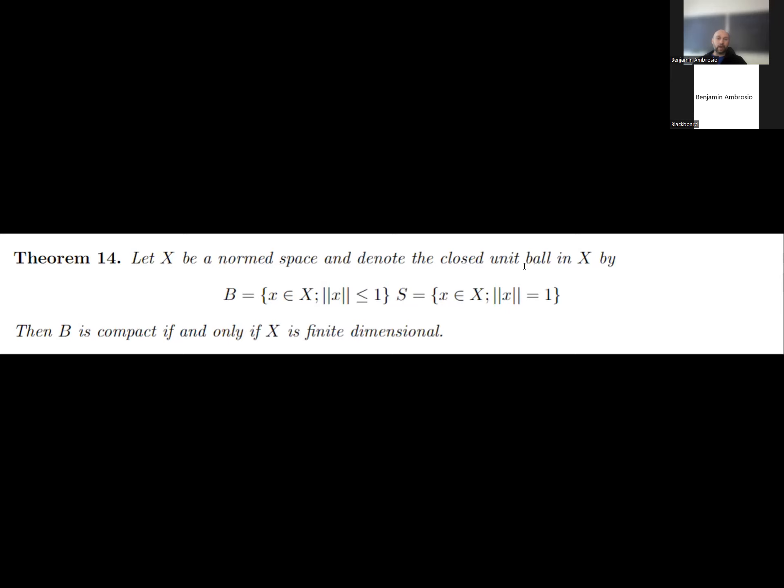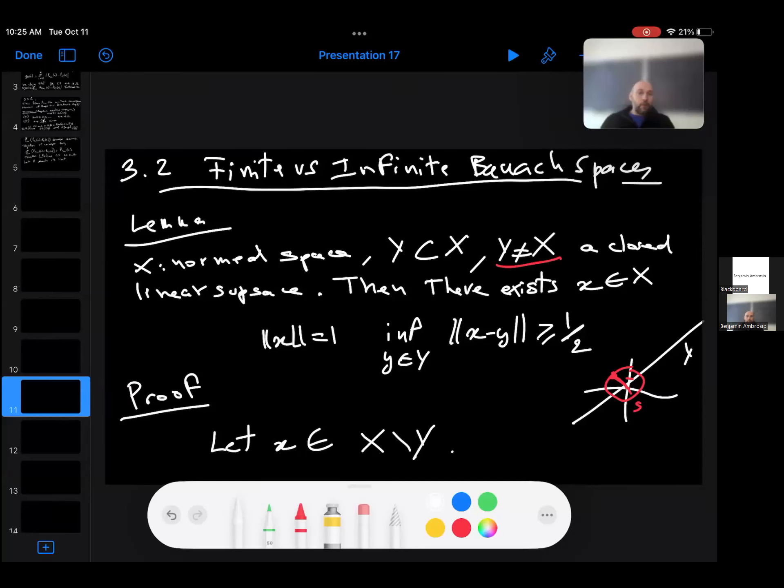So next I'm going to give the ideas of the proof. The proof of the theorem relies on this lemma. When you have a normed space and you have a closed linear subspace Y, which is a proper subspace, that means Y is not equal to X, there exists some x such that x belongs to X but not to Y. Then you can always find x such that the norm of x is one and the minimum of the distance between x and any element of Y is greater than one divided by two.